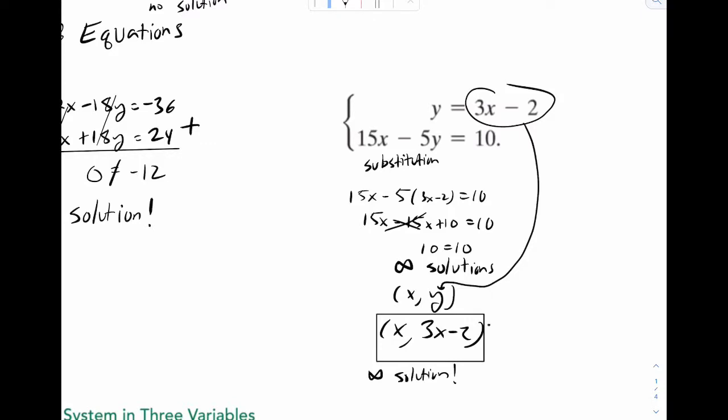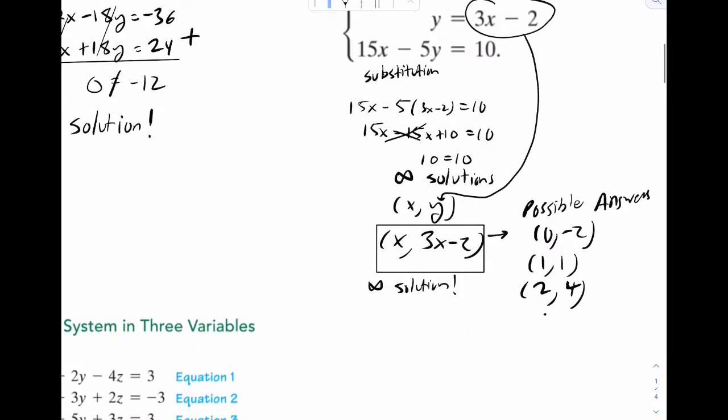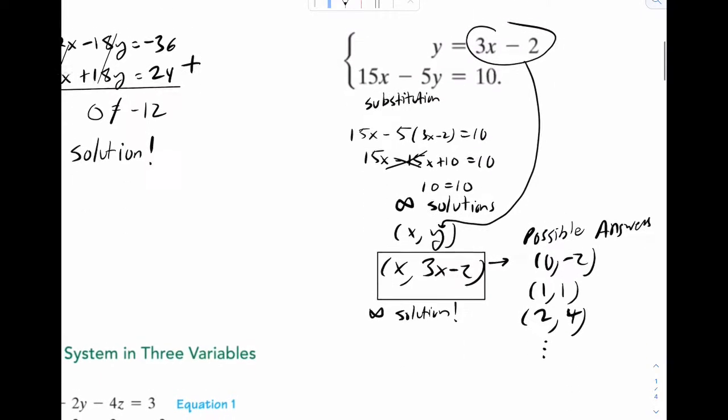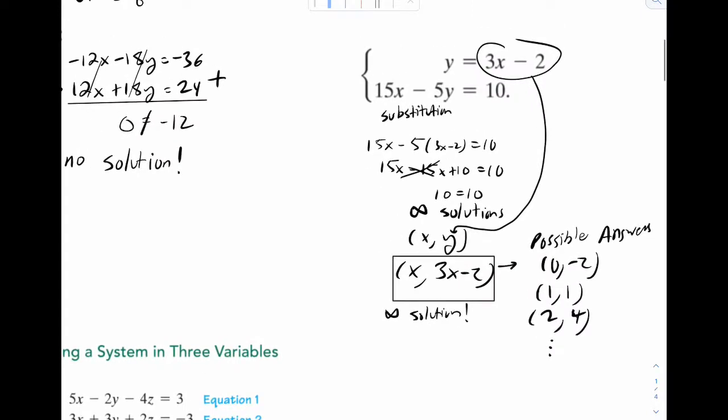This piece right here is your infinite solution. That's what it really means. And you could use it to generate possible answers. So for example, possible answers could be, let's plug in zero, so zero negative two, we could plug in one, so one one, and plug in two, and plug in, so that'd be like four. And we could do this forever. And that's what it really means to have an infinite solution. So in pre-calc, this is what you'll be doing. You can't just simply write infinite solutions like in algebra one, we're going to write this.